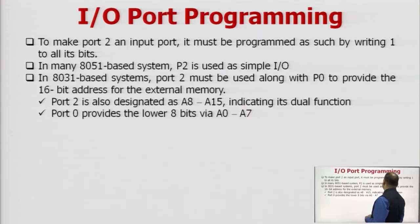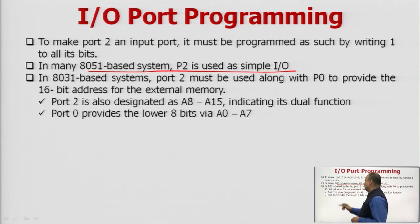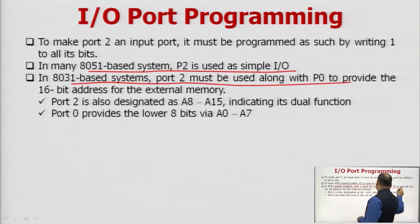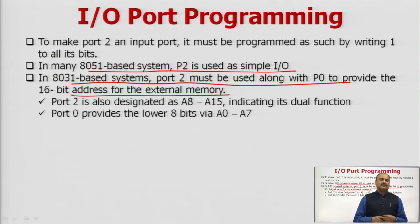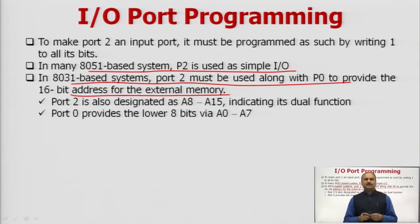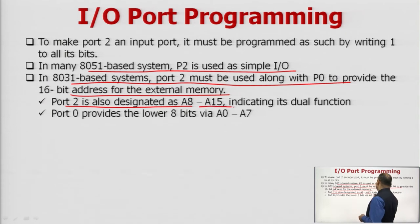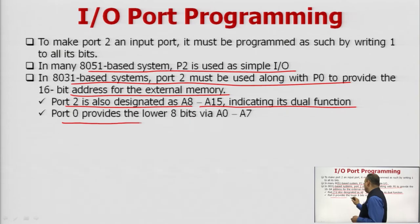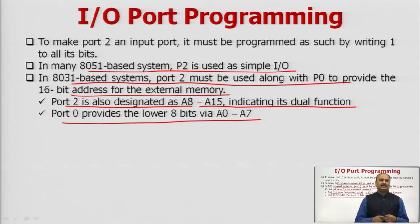To make port 2 an input port, it must be programmed by writing 1 to all the bits. In many 8051-based systems, P2 is used as a simple input-output port. But in 8031-based systems, port P2 must be used along with port P0 to provide the 16-bit address for external memory, since the 8031 does not have internal program memory. Port 2 is designated as address lines A8 to A15, while port 0 provides the lower 8-bit address on lines A0 to A7.